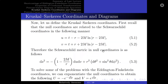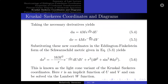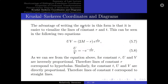Now, let us define the Kruskal-Szekeres coordinates. First, recall that the null coordinates are related to the Schwarzschild coordinates in the following manner, and the Schwarzschild metric in null coordinates is as follows. To solve some of the problems with Eddington-Finkelstein coordinates, we can exponentiate the null coordinates to obtain new coordinates. Taking the necessary derivatives and substituting these new coordinates into the Eddington-Finkelstein form of the metric yields the light-cone variant of the Kruskal-Szekeres coordinates. Here, r is an implicit function of capital U and capital V and can be solved by the Lambert W function.